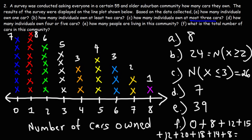Adding those up: eight plus twelve is twenty, plus fifteen is thirty-five, plus twelve is forty-seven, plus twenty is sixty-seven — and including the rest, I got a total of one hundred and seven cars surveyed to be in this community. So that's it for this video — now you know how to interpret the data presented on a line plot. Thanks for watching.